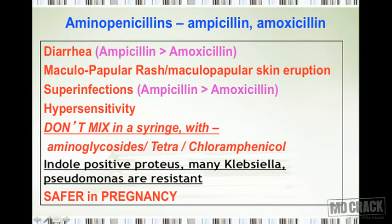Important drug interaction to remember: penicillins should not be mixed in a syringe with aminoglycosides, tetracyclines, or chloramphenicol. Also note the spectrum limitations — aminopenicillins are not useful against indole-positive Proteus, Klebsiella, or Pseudomonas. When thinking of the extended spectrum, include E. coli, some Proteus, Salmonella, Shigella, Branhamella, Borrelia, Listeria, and H. pylori — but do not include indole-positive Proteus, Klebsiella, or Pseudomonas.